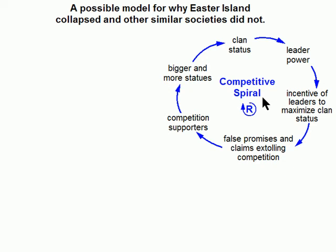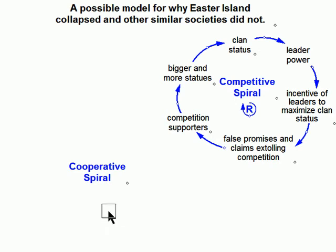What did the many societies that did not collapse have in common? At the most fundamental level, there's a big clue already on the model. See this competitive spiral? The people that did not collapse probably had the opposite of that — cooperation. They had a cooperative spiral. So let's name the other loop we need the cooperative spiral, and we'll put it onto the model. Let's put it about here, and it's a reinforcing loop.